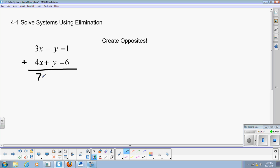And we'll then add them. 3x plus 4x, 7x. Minus y plus y cancels. 1 plus 6, 7. Now I have just an equation with one variable. Let's divide 7 on both sides, and I find that x equals 1. So what do I do with this 1?